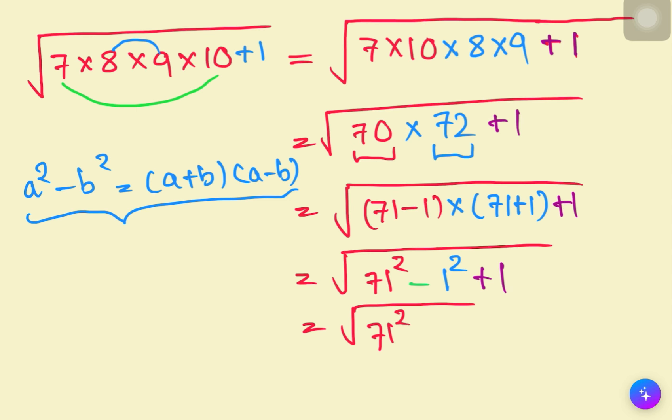When we apply the formula, we get 71 squared minus 1 squared plus 1. Since 1 squared equals 1, we have minus 1 plus 1, which simplifies to 0. Therefore, the expression becomes 71 squared.